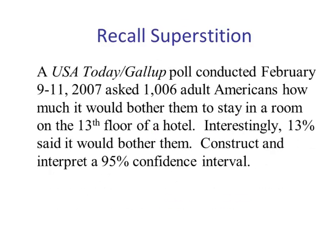Let's look at another example. Recall the superstition example from the last video: a USA Today Gallup poll conducted February 9–11, 2007 asked 1,006 adult Americans how much it would bother them to stay in a room on the 13th floor of a hotel. Interestingly, 13% said it would bother them. Construct and interpret a 95% confidence interval. Before we can use Minitab or StatCrunch, we have to express 13% as X over N. We know N is 1,006, but we don't know X, so we have to compute X using P-hat.